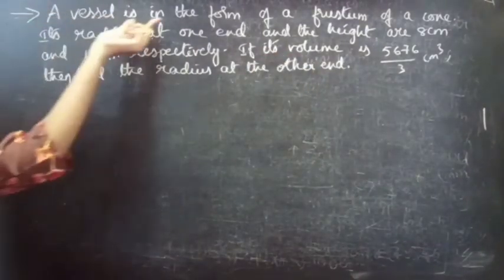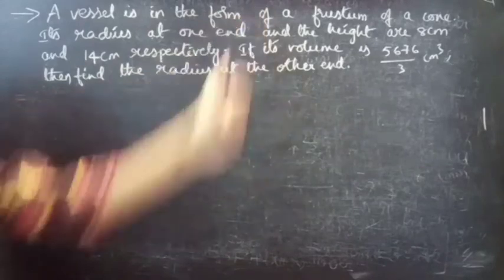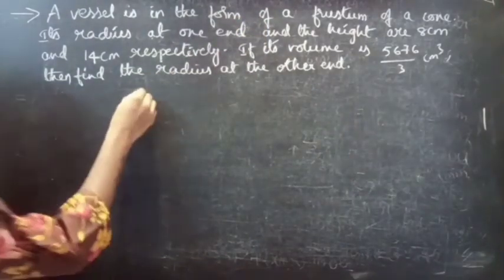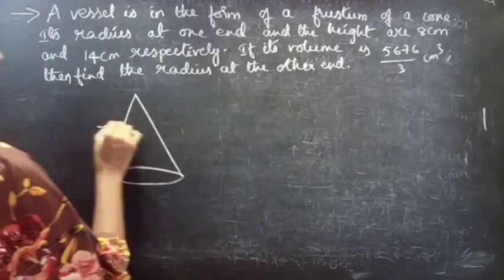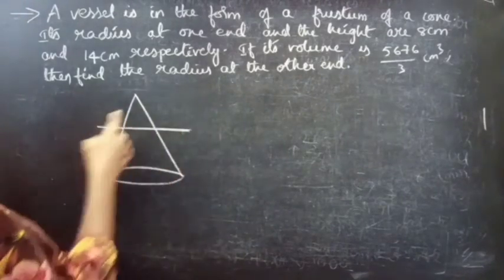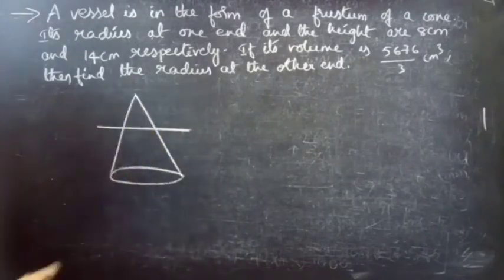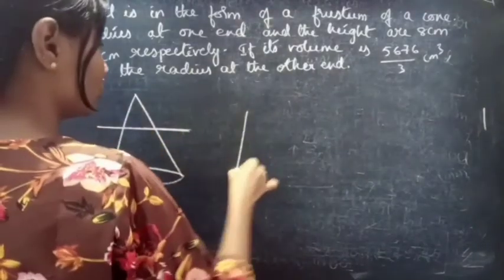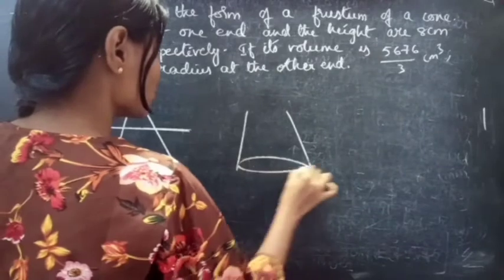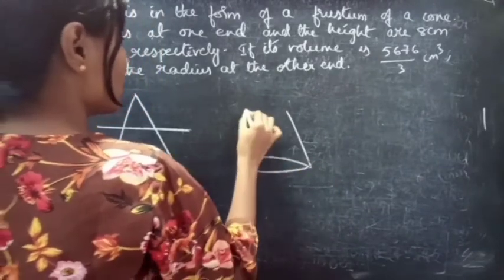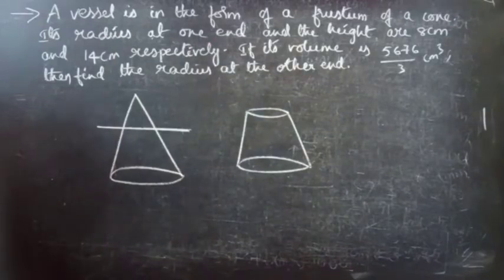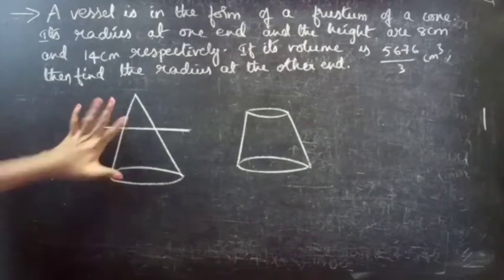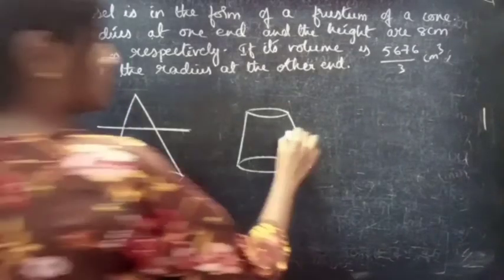The vessel is in the form of a frustum. A frustum is nothing but — if you consider a cone and remove the upper part, the object obtained after removing the upper portion of the cone is called a frustum.